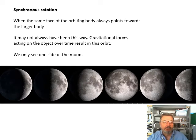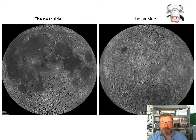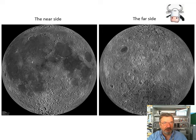The gravitational forces acting on the object over time result in this orbit, and as a result, we only see one side of the Moon. Phases of the Moon we'll talk about later, but we only see one side of the Moon - the near side. There is the near side and the far side.